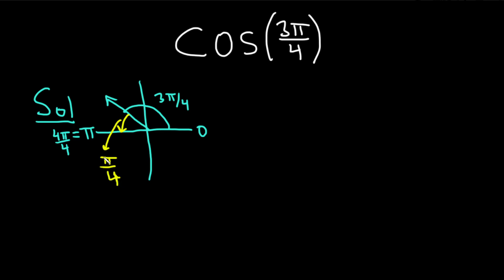You can tell because you can subtract: 4π/4 minus 3π/4 is π/4. So now we think about the cosine of π/4. This is something that, from memory, we know is √2/2.